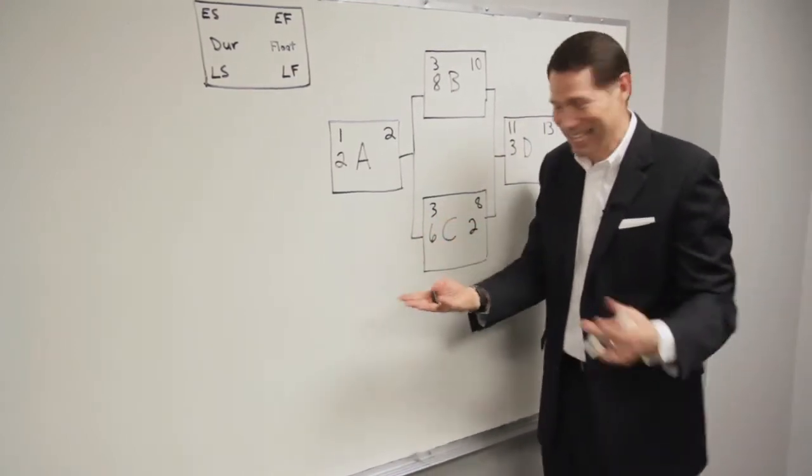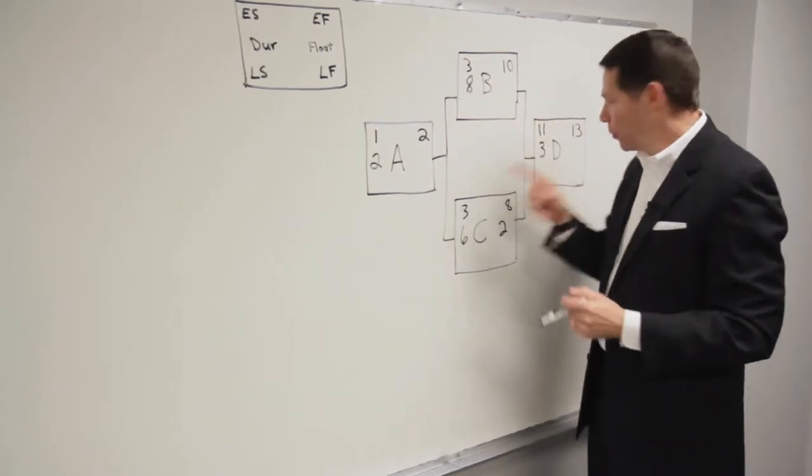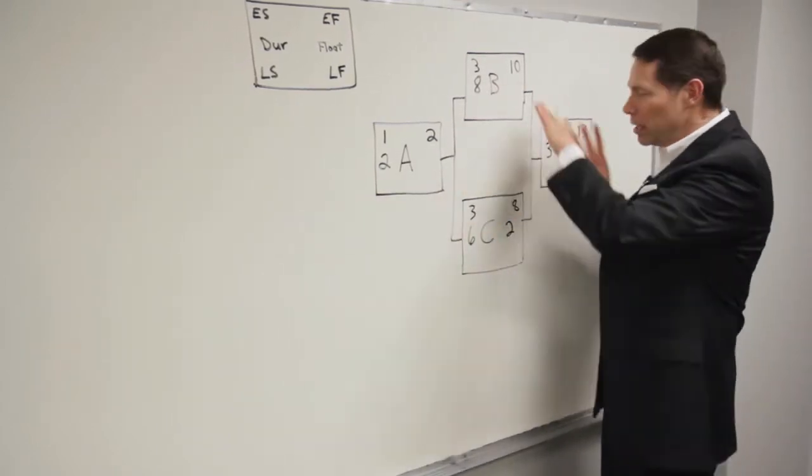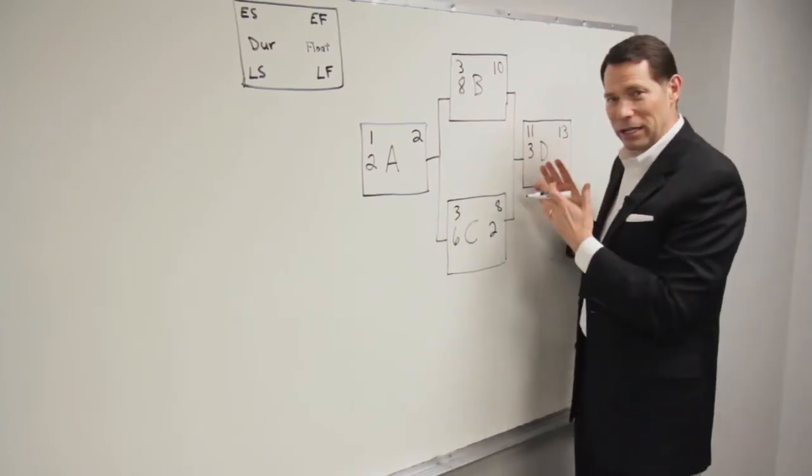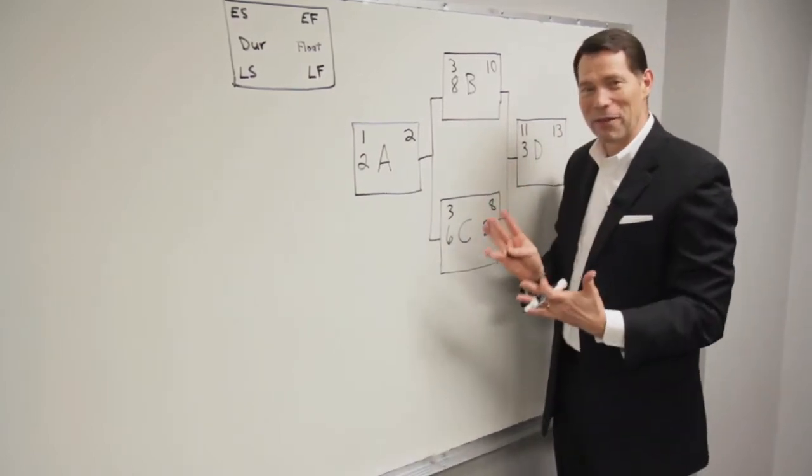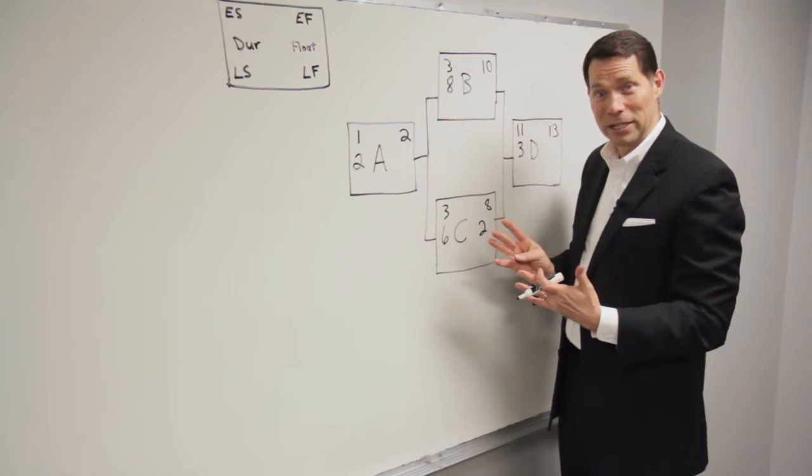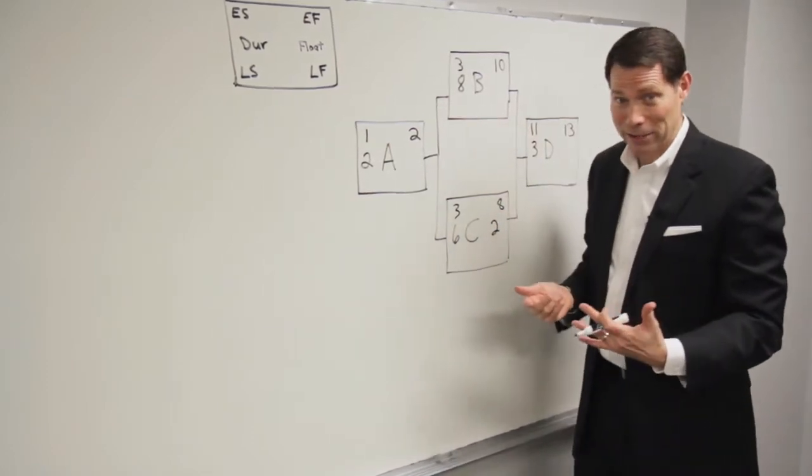So that's the forward pass. What's that actually saying? It says that it's going to take me 13 days. That's the longest path through here. It's not going to be any shorter than that. So it's going to take 13 days. So that's the forward pass. Now we're going to do the backward pass.